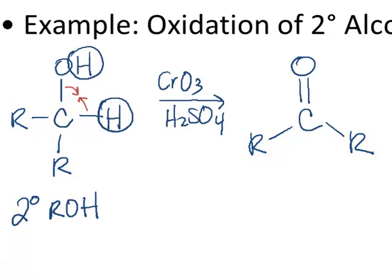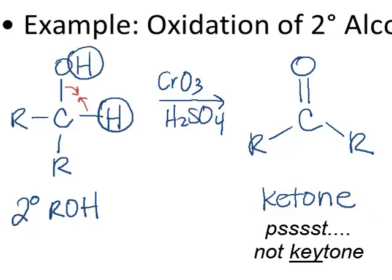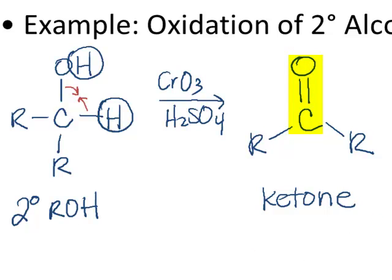Notice that our reactant was a secondary alcohol. The product that we've made, which contains the carbonyl bond, is actually a new functional group. This is what's called the ketone functional group, because it contains a carbonyl bond — a carbon double bonded to an oxygen — with an R group on each side. Each one of those R's must be a carbon chain; it can't be substituted with a hydrogen, or you'd actually change the functional group. This is what happens when you oxidize a secondary alcohol: you end up with a ketone molecule.